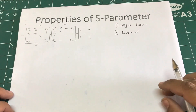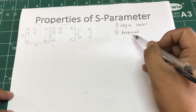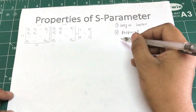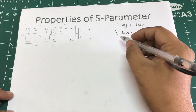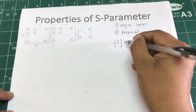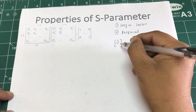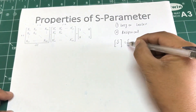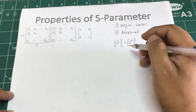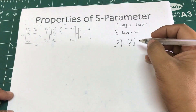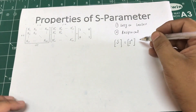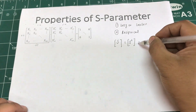We're going to look at reciprocal first. The definition of a network being reciprocal is this: if the S-parameter matrix S equals the transpose of that matrix, then the network is reciprocal.